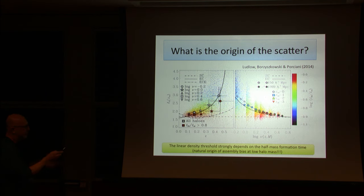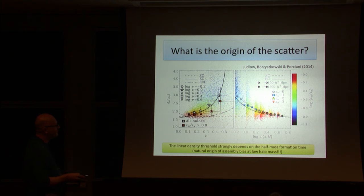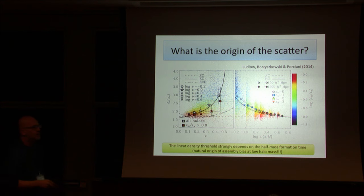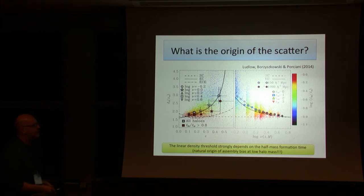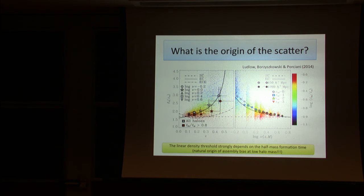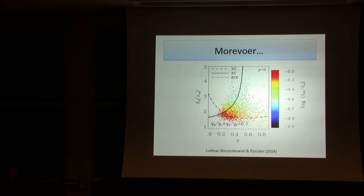So let's go back to try to understand what is the origin of this scatter in the barrier that Marcello just showed before. Here, now you have peak height in this case, ellipticity versus the linear density. And now you clearly see the colors here segregate. What are colors? Formation time. So if you plot at fixed halo mass, the formation time of the halos—halos that formed earlier tend to be associated with higher peaks in the initial condition rather than halos that collapse later.